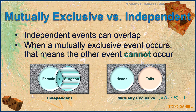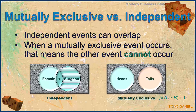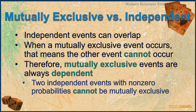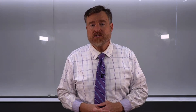Independent events can overlap — there is an overlap between being female and being a trauma surgeon. When a mutually exclusive event occurs, that means the other event cannot occur, which would not be the case with a female trauma surgeon, but would certainly be the case with flipping a coin: if heads occurs, then tails cannot occur — there is no intersection between those two events. Therefore, mutually exclusive events are always dependent. Two independent events with non-zero probabilities cannot be mutually exclusive. Next, we're going to explore the rules for multiplication and addition using probability.